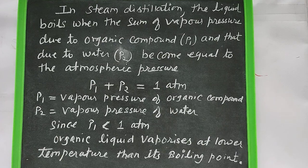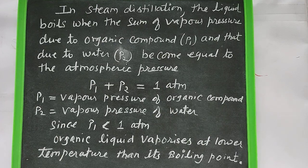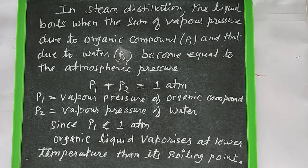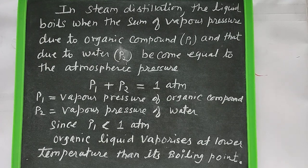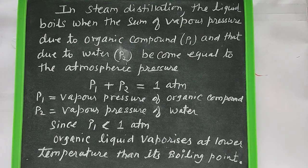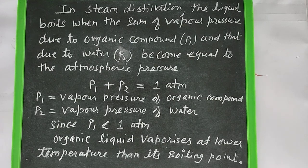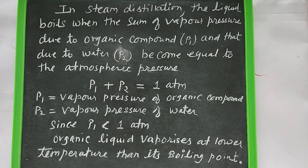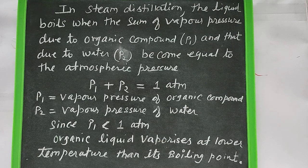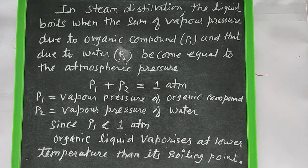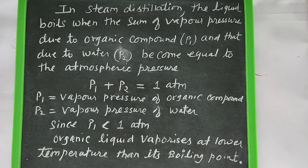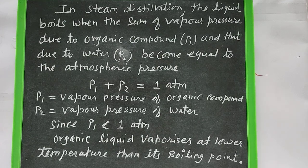In steam distillation, the liquid boils when the sum of vapor pressure due to organic compound (P₁) and that due to water (P₂) become equal to the atmospheric pressure. So P₁ + P₂ = 1 atm. Since P₁ < 1 atm, the organic liquid vaporizes at lower temperature than its boiling point.